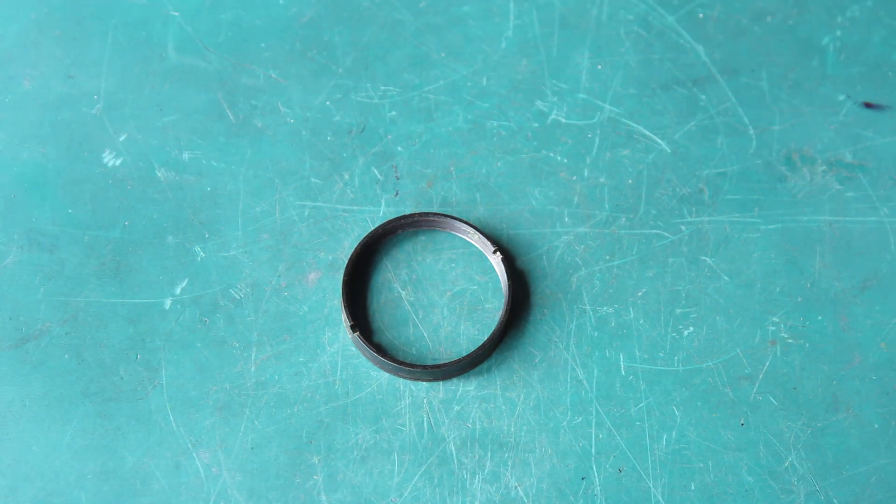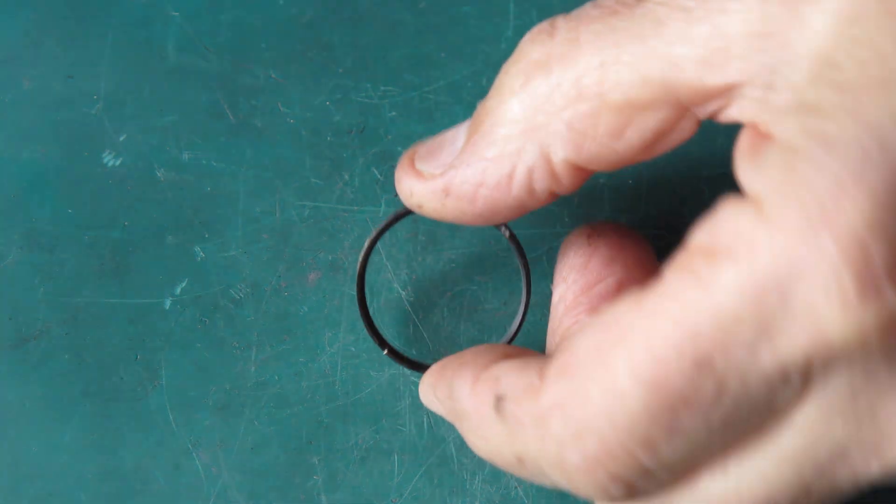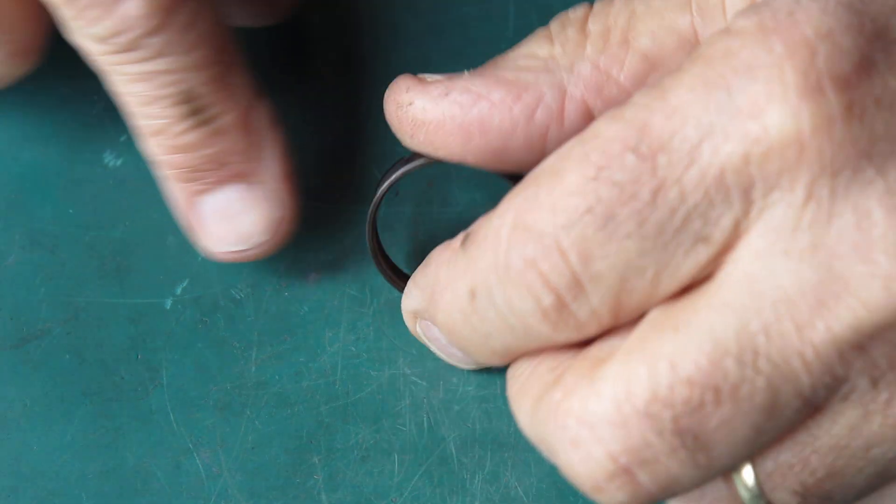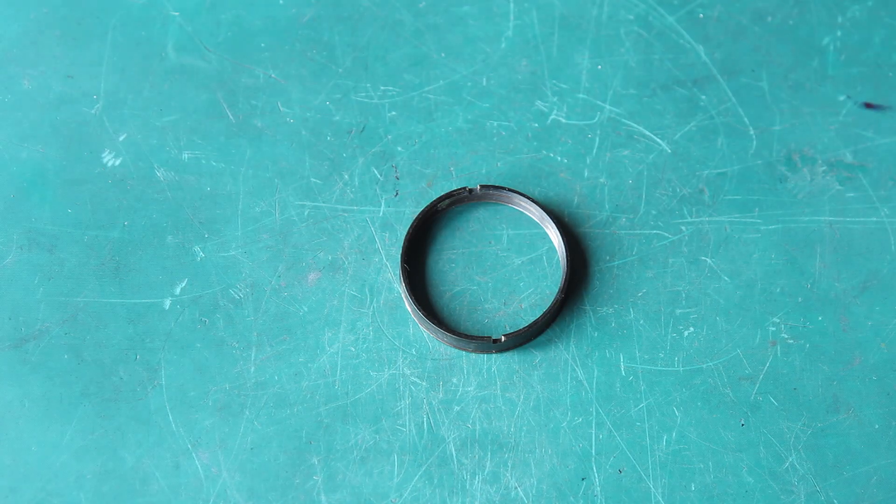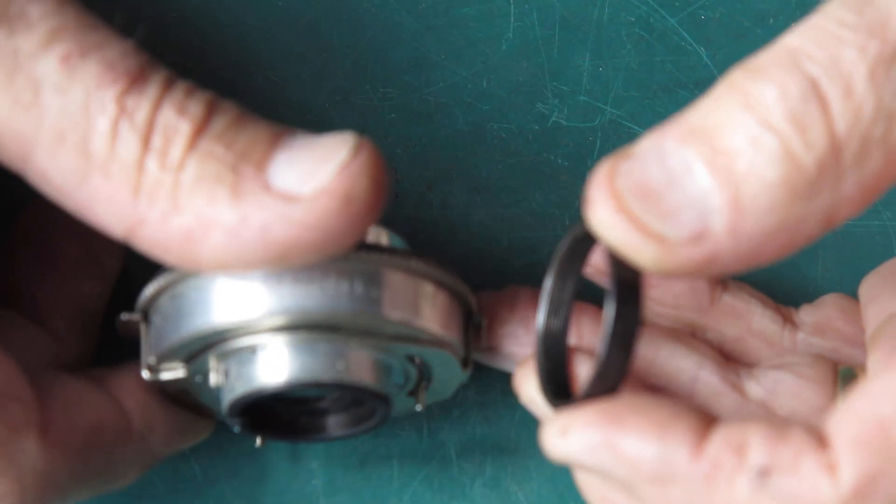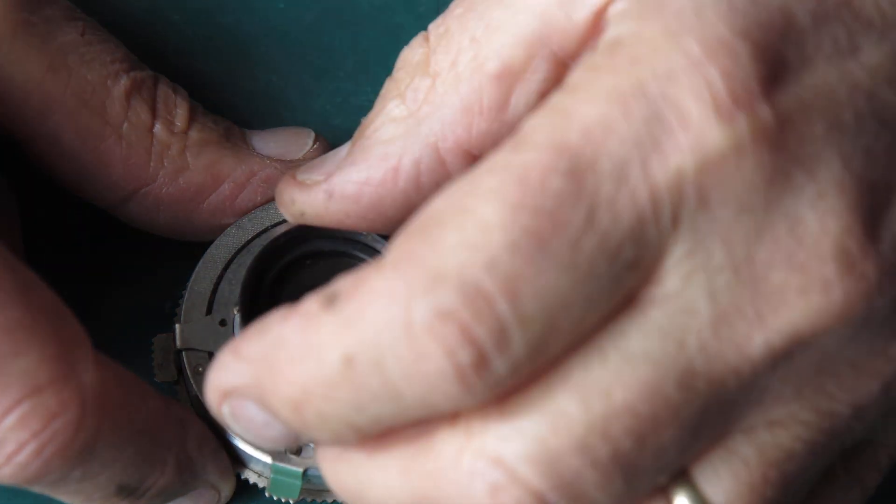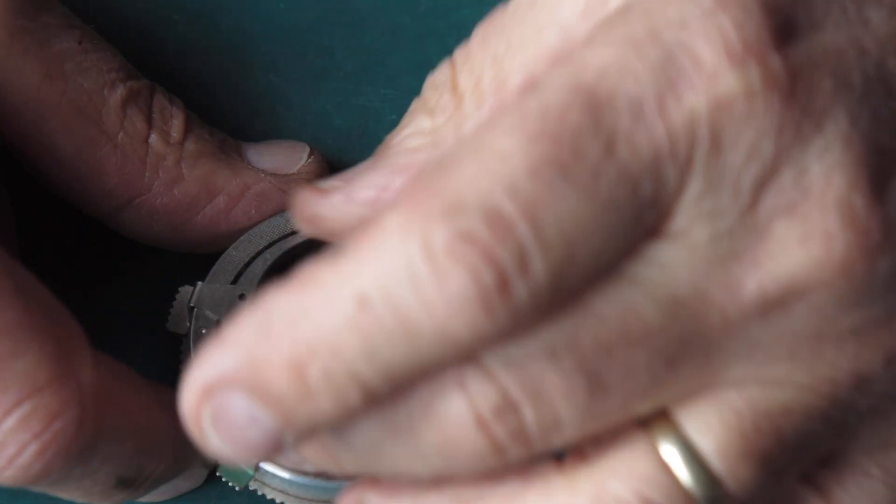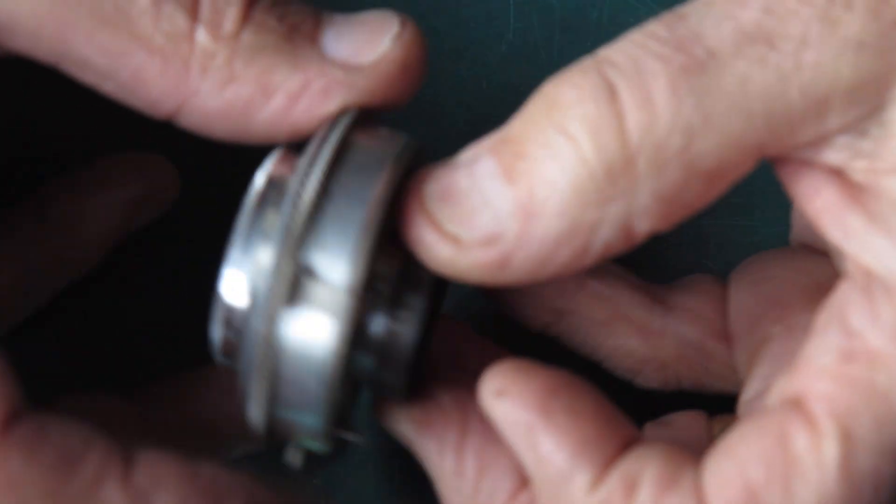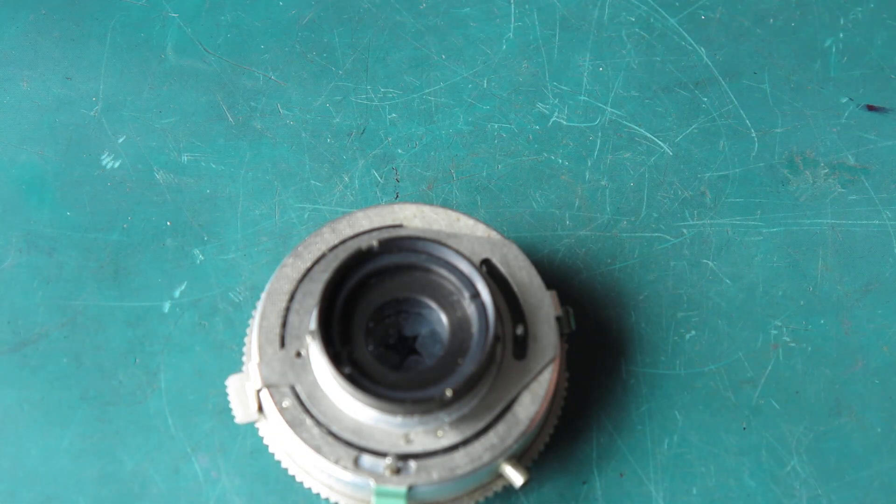Here we have a shutter retaining ring from a camera, and as the name suggests, it's a ring used to retain the shutter in the camera body. Here's a shutter stripped of its outer housing. Here's the retaining ring, and you can see it screws on at the back. That's used to hold the shutter in the camera body.